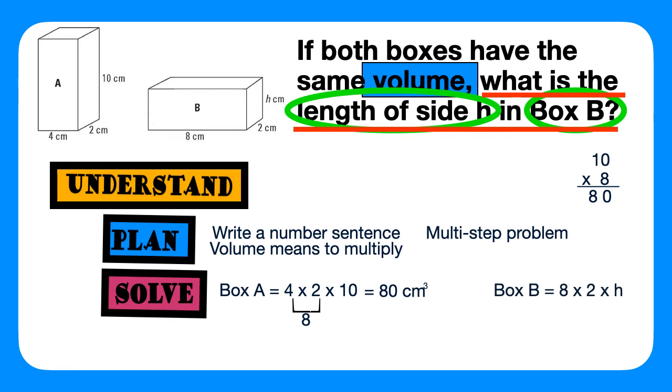Now, we must find the volume of box B. 8 times 2 times H. 8 times 2 is 16. And when we divide 16 by 80, we get 5. So, the length of side H is 5 centimeters.